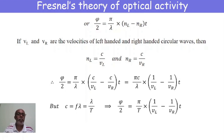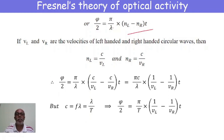If v_L and v_R represent the velocities of light corresponding to the anti-clockwise (left-handed) and clockwise (right-handed) waves, then n_L = c/v_L and n_R = c/v_R, where c is the speed of light. Substituting into the relation, φ/2 = (π/λ) × c × (1/v_L − 1/v_R) × t, and taking c out we get (πc/λ)(1/v_L − 1/v_R)t.